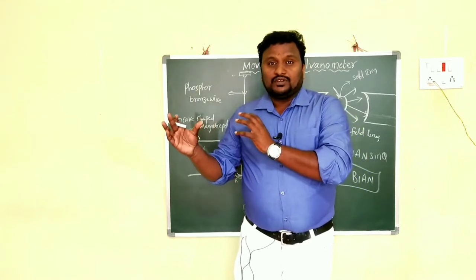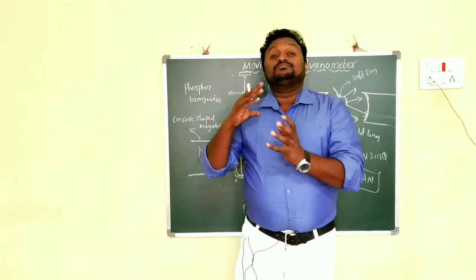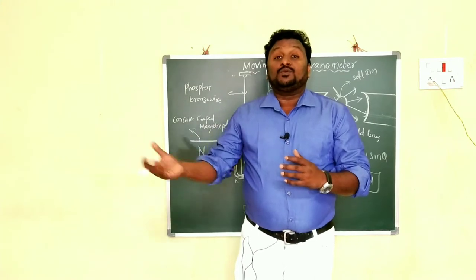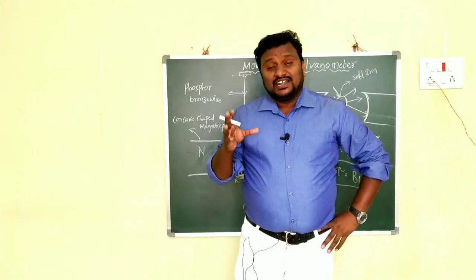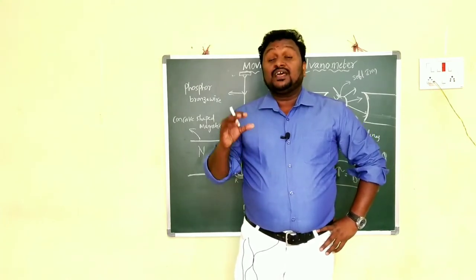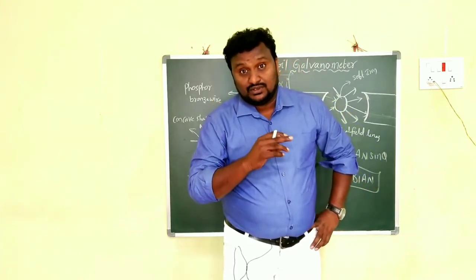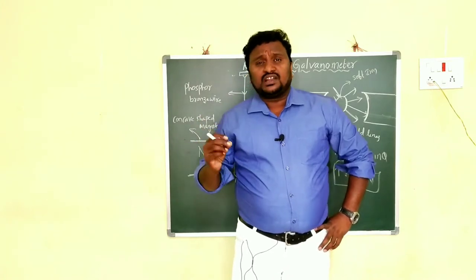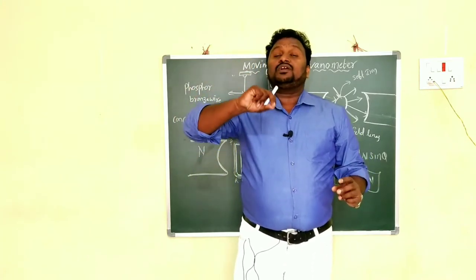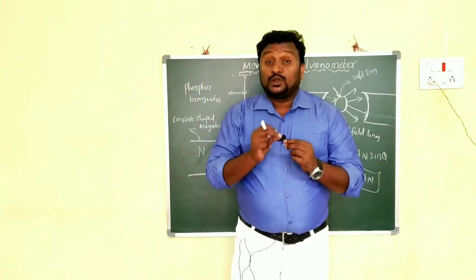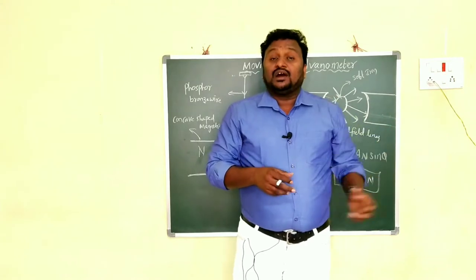A moving coil galvanometer — the coil moves due to the magnetic field, and due to that the galvanometer works. Simply put, a moving coil galvanometer is a device used to measure lower currents, up to 10 to the power of minus 9 amperes. It can also be used to measure small currents in circuits, and can be converted into an ammeter and voltmeter.